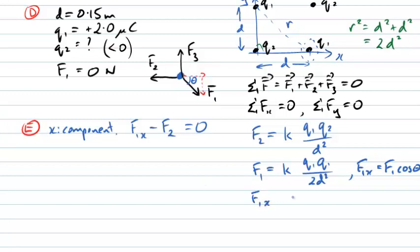So F1, the x component here, will be k q1 squared divided by 2 d squared times the cosine of 45 degrees. And once again, the cosine of 45 degrees is quite easy to know. It's one of those identities you should be familiar with. That's going to be the same as one over root two. That's the cosine of 45 degrees.